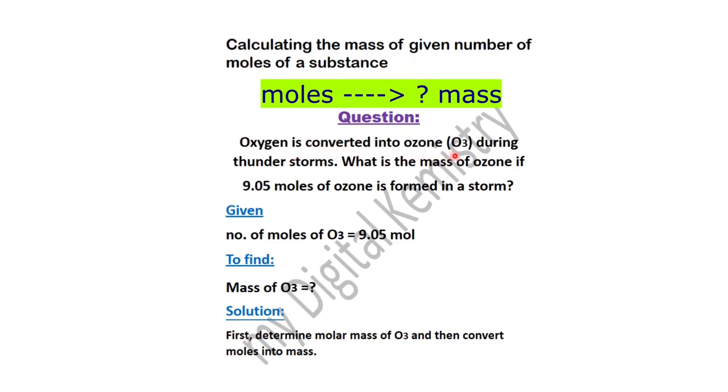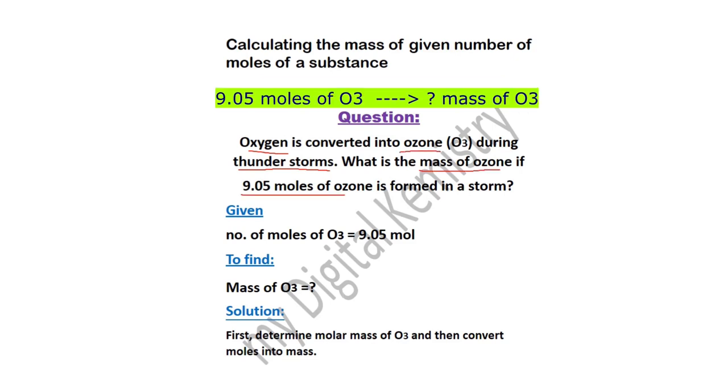Question ہے ہمارے پاس: Oxygen is converted into ozone during thunderstorms. What is the mass of ozone if 9.05 moles of ozone is formed in a storm? یعنی جب گرد چمک کے ساتھ طوفان آتا ہے تو Oxygen ozone میں convert ہو جاتا ہے۔ اگر 9.05 moles of ozone اس طوفان کے دوران بن رہا ہے تو ہمارے پاس mass of ozone کیا ہوگا؟